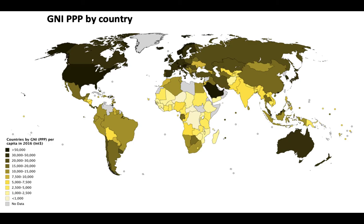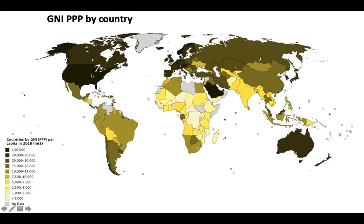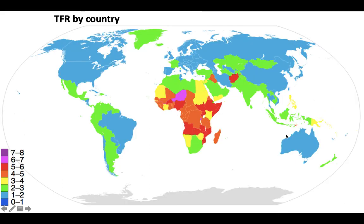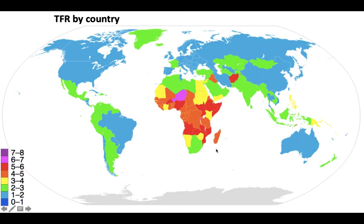If we look at the wealth of a country by the average purchasing power per individual per year — where dark countries have higher wealth and lighter countries have lower wealth — and compare that to fertility rates where red and orange countries have higher fertility and blue and green have lower fertility, you can see a clear pattern. Wealthy countries like the United States, Saudi Arabia, Australia, Norway, and Ireland tend to have low fertility rates, whereas countries with less money like Madagascar or India tend to have higher fertility rates. This pattern is especially stark in sub-Saharan Africa.